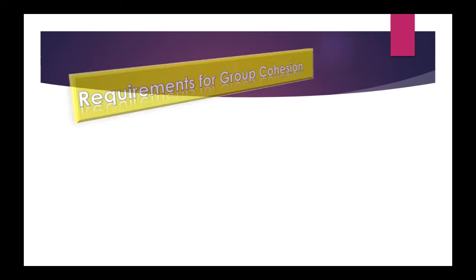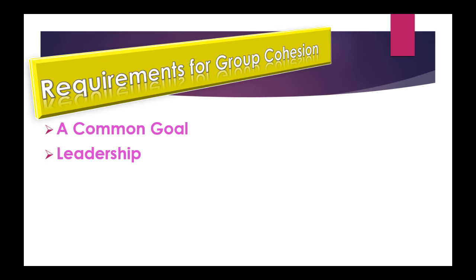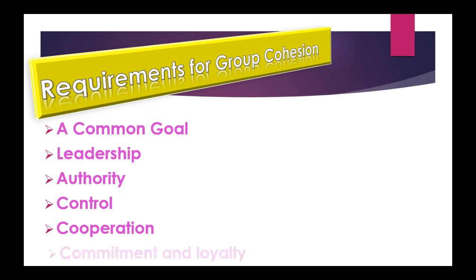The requirements for group cohesion are: first, a common goal; second, leadership; third, authority; fourth, control; fifth, cooperation; and sixth, commitment and loyalty. We're going to be looking at these in detail.